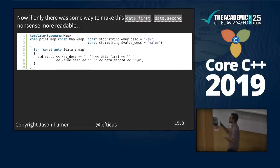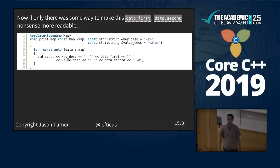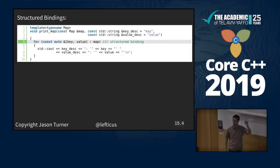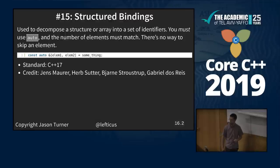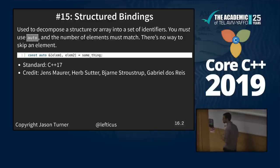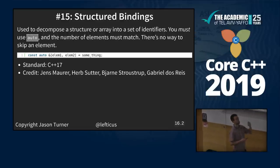If only there was some way to make 'data.first' and 'data.second' more readable in our range-based for loop. Structured bindings! C++17. I can say I want to name this key and value pair. Used to decompose a structure into a set of identifiers — you must use auto, you cannot specify the type, and the number of elements must match. C++17: Jens Maurer, Herb Sutter, Bjarne Stroustrup, Gabrielle Dos Reis.